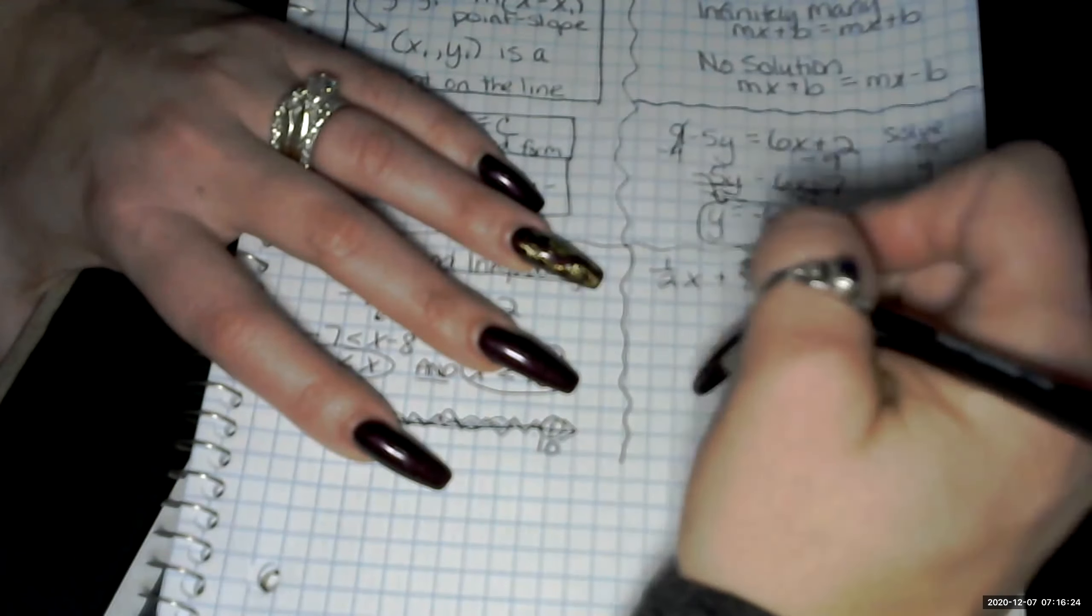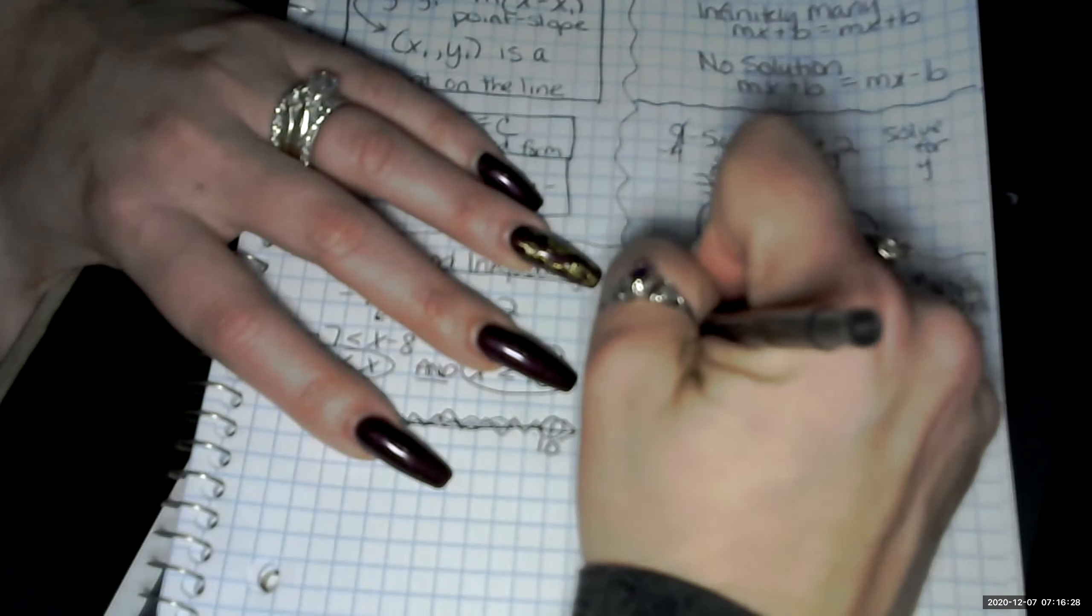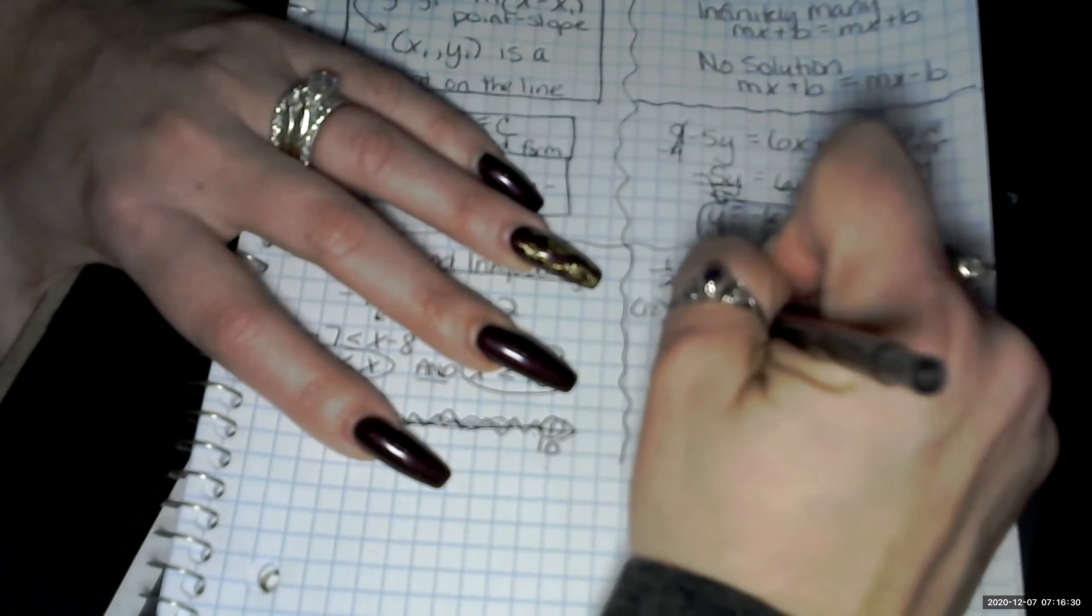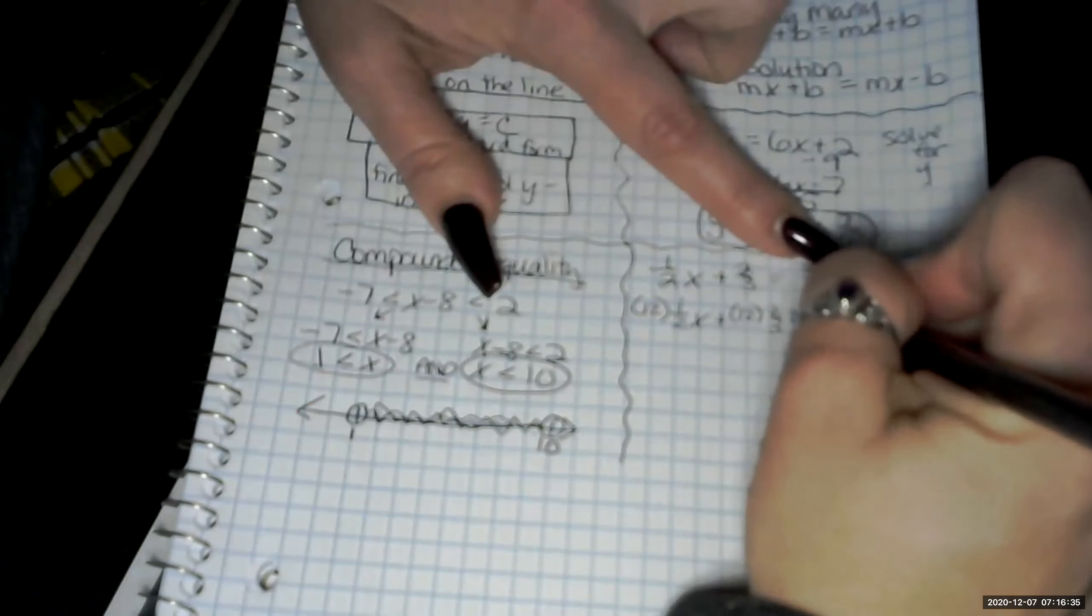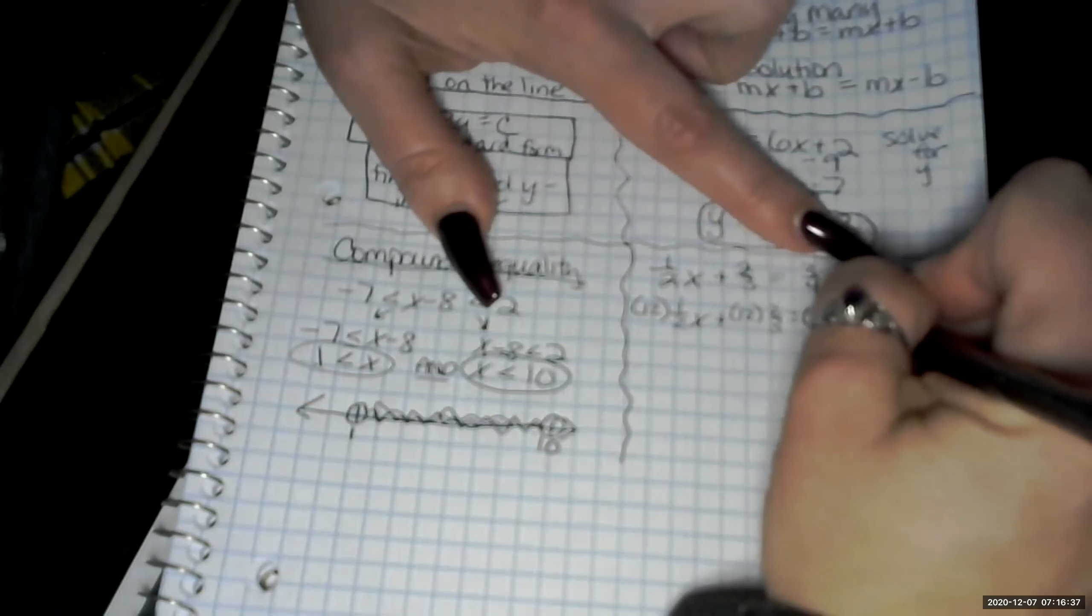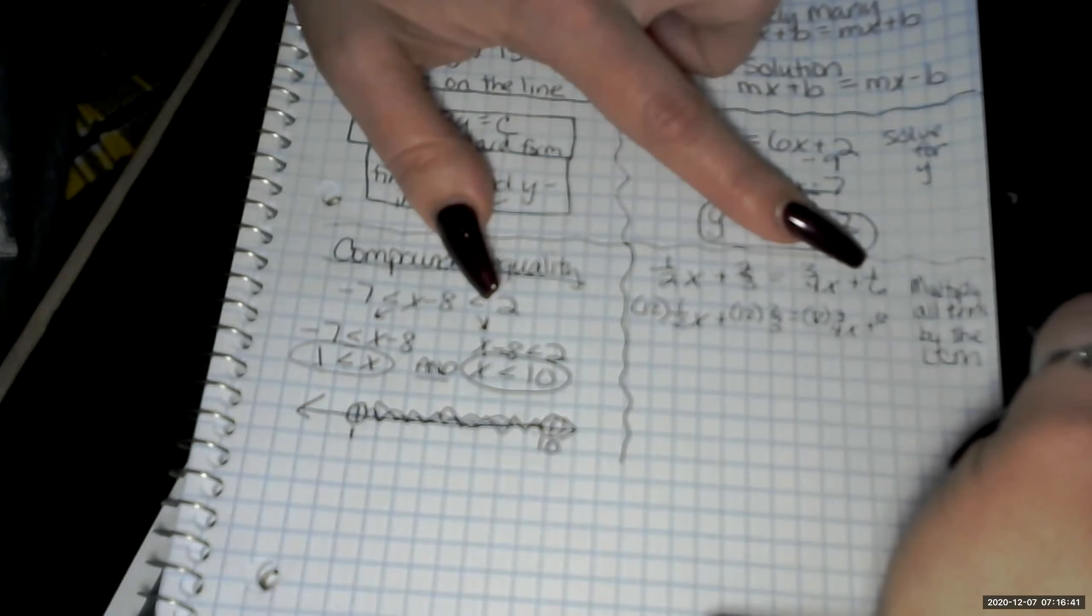12 times 1 sixth. So I just rewrote this entire equation and I put that we're multiplying 12 to each term.